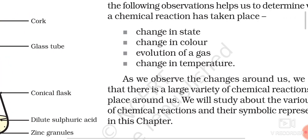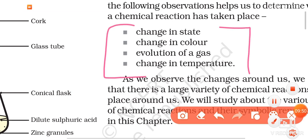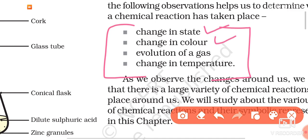From these three activities, we learned one important thing: during any chemical reaction, certain changes are apparent. These changes include a change in state, a change in color, evolution of gas, and a change in temperature. If these changes are visible, it means a chemical reaction is taking place.